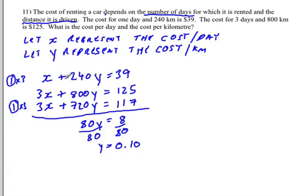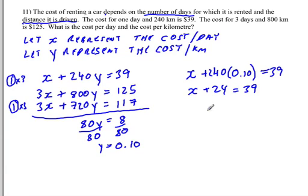So we've got x plus 240 times y, which is 0.10, is equal to 39. So x plus 24 is equal to 39, subtract 24 from both sides, you get x is equal to 15, and this will be dollars.